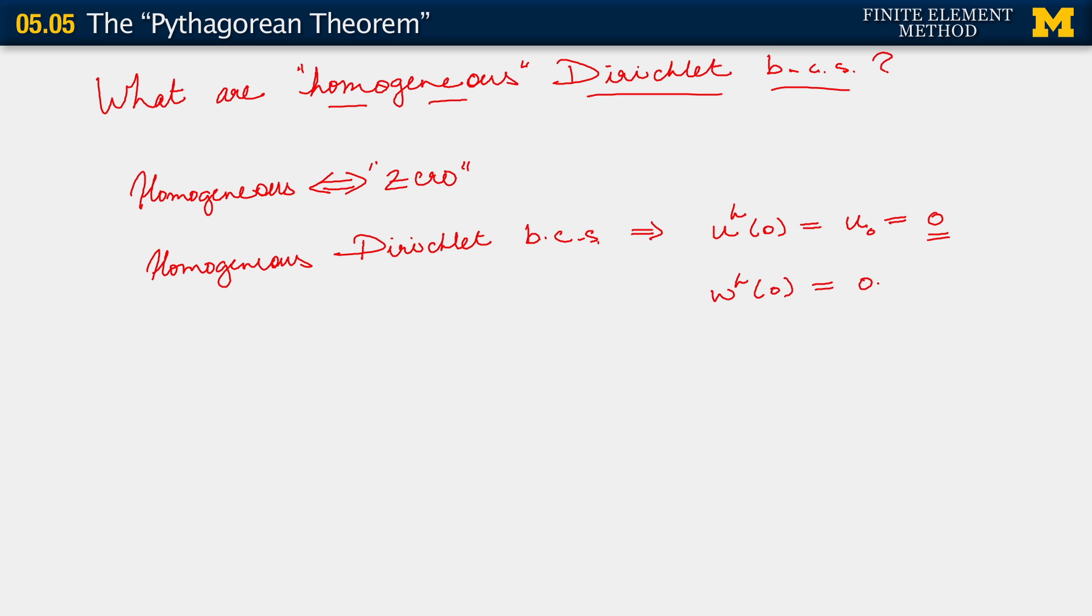But now, with this fact that both UH and WH vanish on the Dirichlet boundary, right? This plus the fact that UH and WH both belong to H1 on omega essentially implies that the spaces are identical, SH is equal to VH, okay?